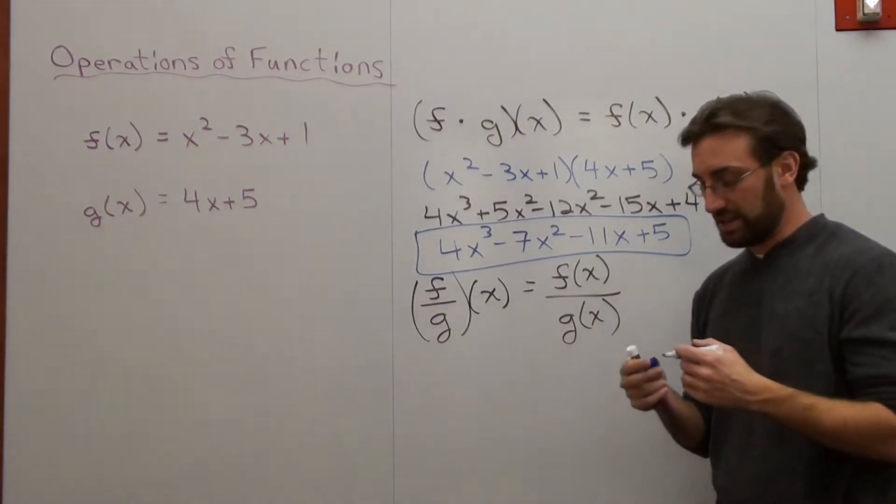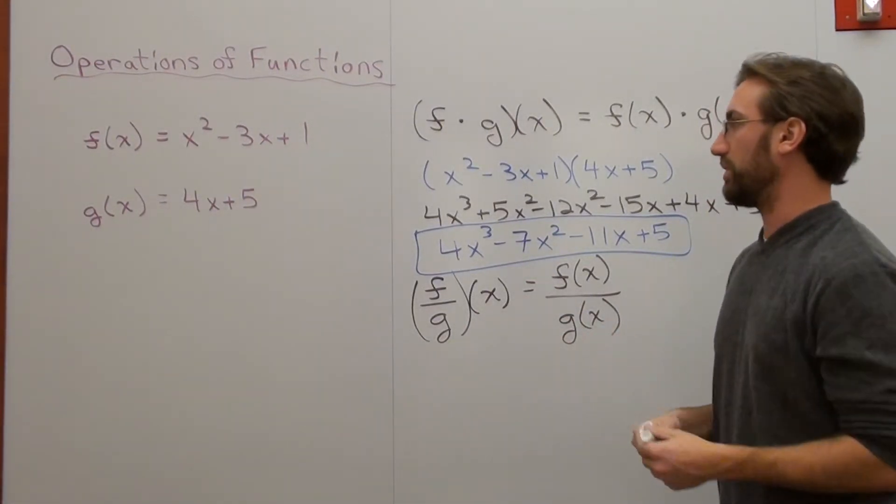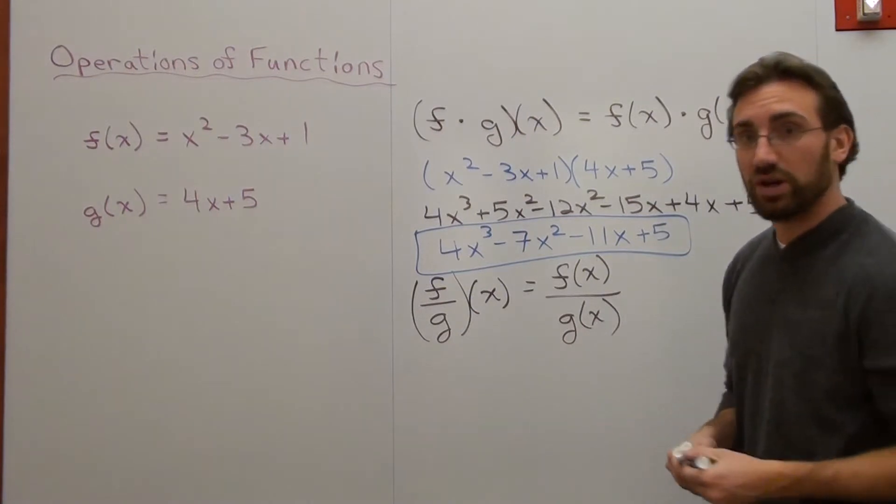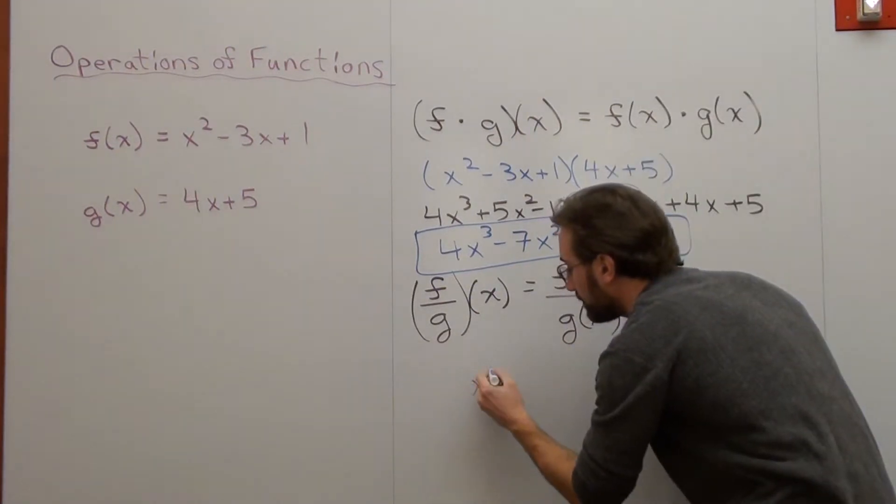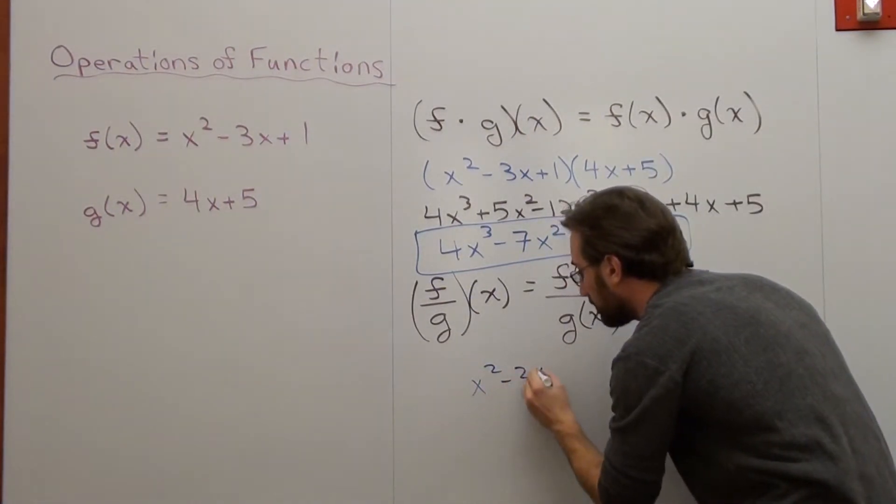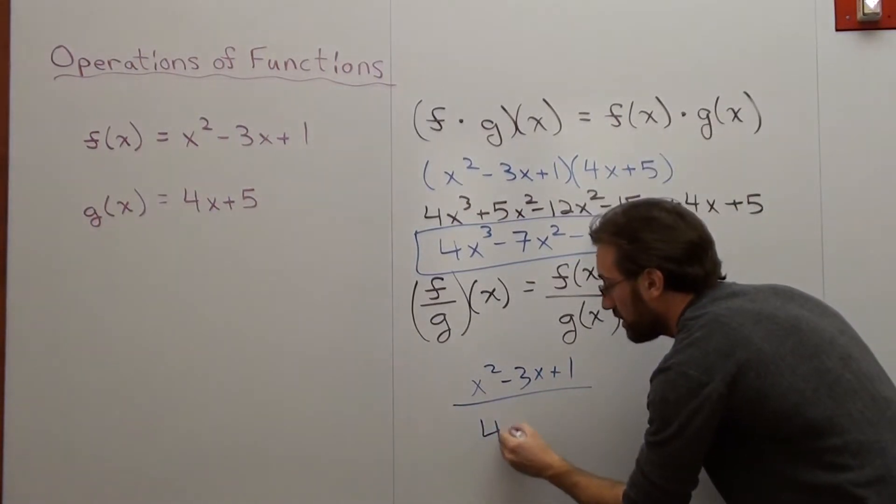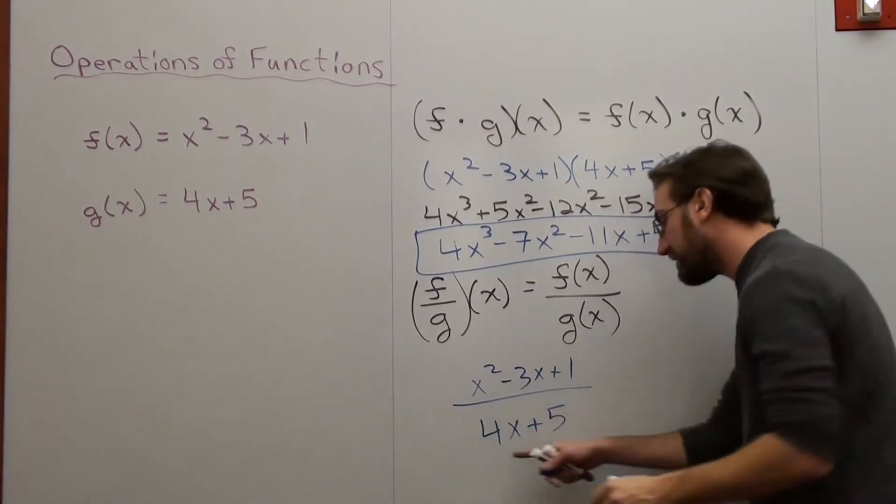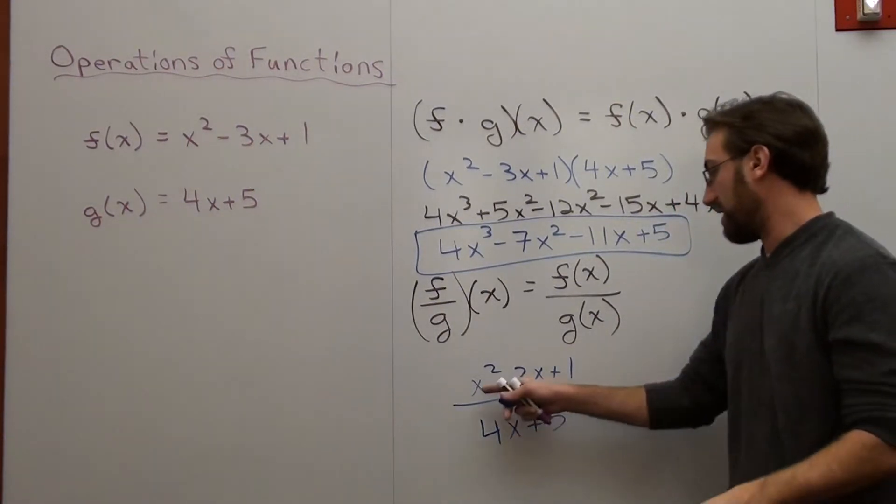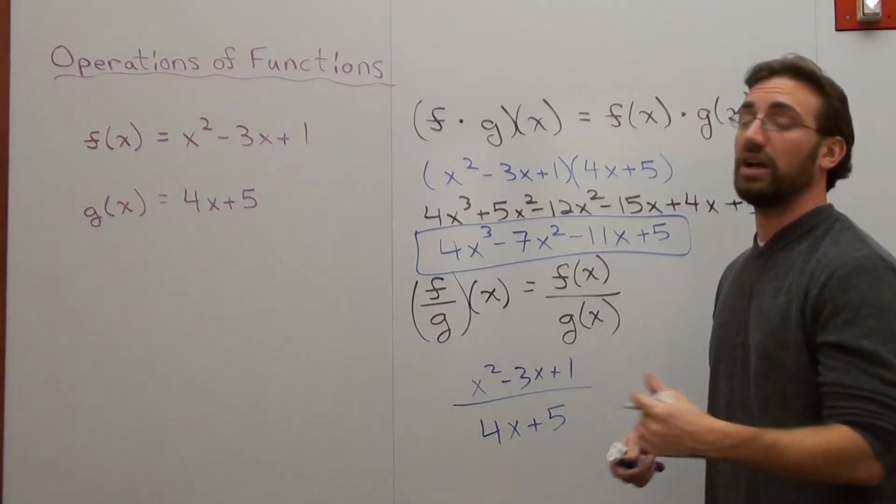This one's a lot easier in this case, but division is not always easier. So I take f of x, which is x squared minus 3x plus 1, and I divide it by g of x, which is 4x plus 5. I can't take a GCF out of the numerator or denominator, so I'm done.